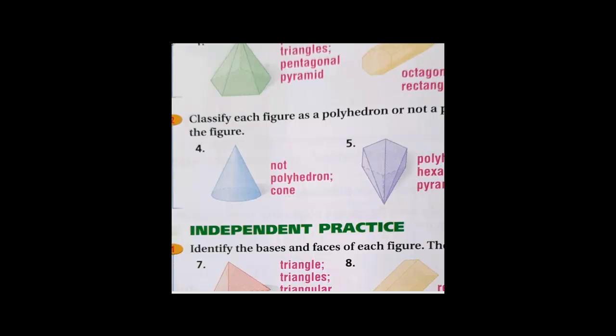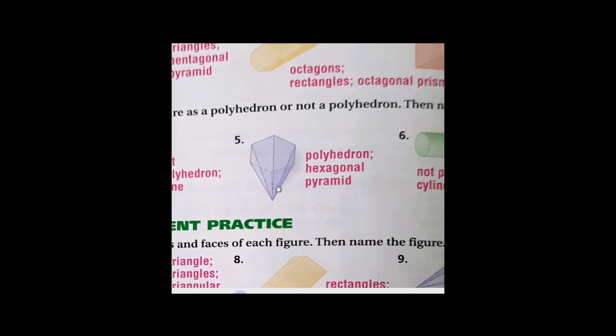Now let's go to the next question. We need to classify each figure as a polyhedron or not a polyhedron, and then name the figure. A polyhedron is a three-dimensional shape where all the faces and bases are polygons. Here, it's not a polyhedron because it has a circle and a curved side, so it's a cone.